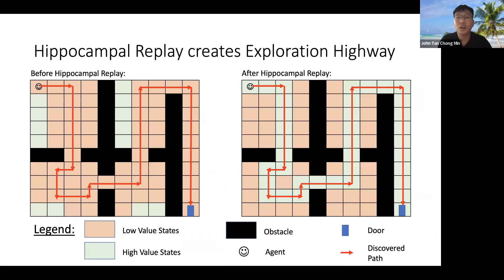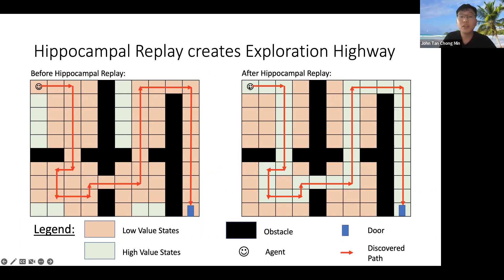This is an illustration of the exploration highway. The red color arrows indicate the discovered path, and we align this discovered path to be that of a high-value state in order to encourage more exploration in the Explore-Exploit equation.